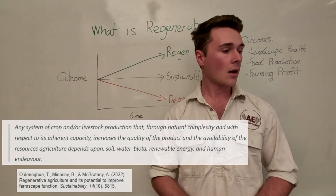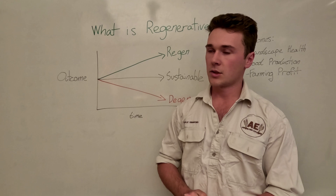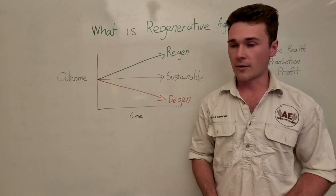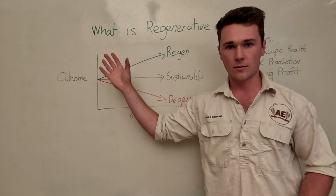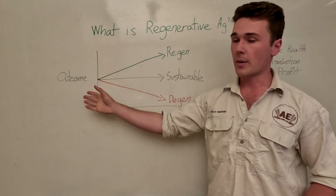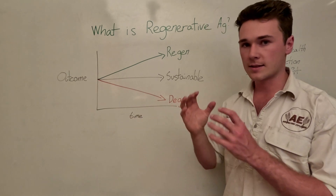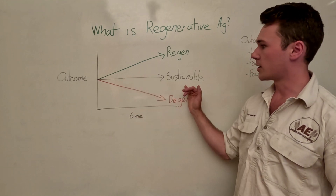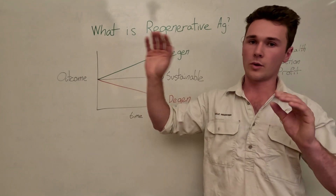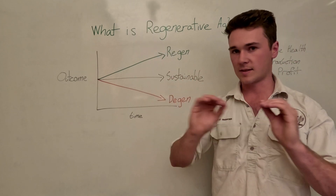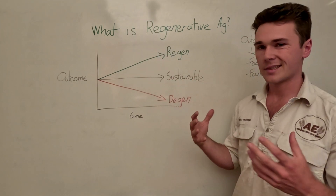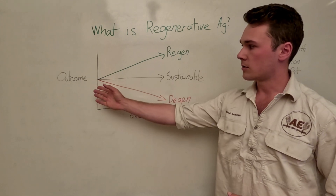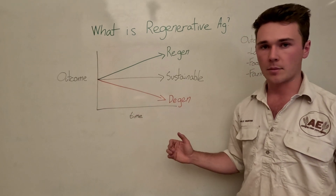That's a good definition but it's one of those scientific definitions. We have a diagram here and this is simply all regenerative agriculture is. We have our outcomes — regenerative agriculture is simply improving that outcome over time. Sustainable agriculture is keeping that outcome the same — not improving it, not degrading it. And then conventional or degenerative agriculture is degrading or reducing that outcome over time.